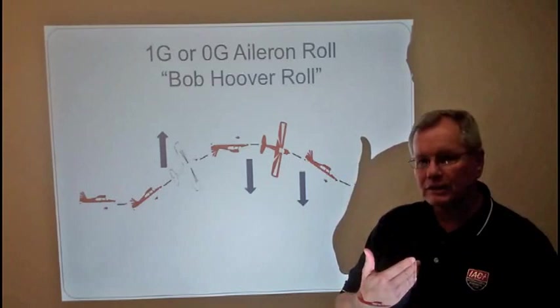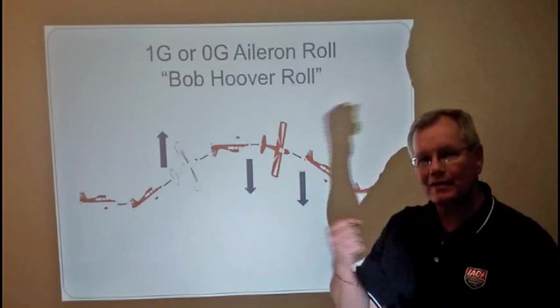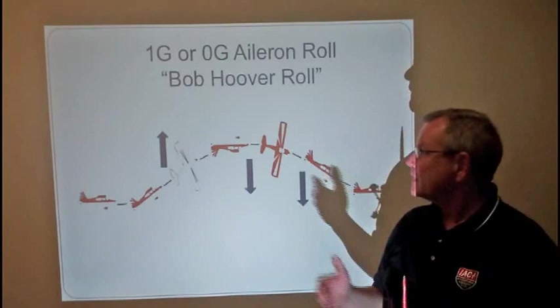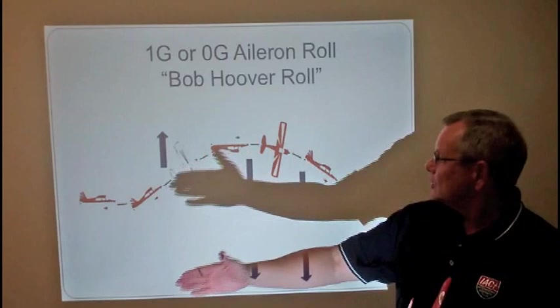If you're doing the 1G roll, you will need some coordinated rudder. In the case of the decathlon, I noticed that it takes about one third of rudder when you're going to the left and about half rudder going right at the normal entry speed of 130, 140. But at 0G, you don't need any rudder at all.